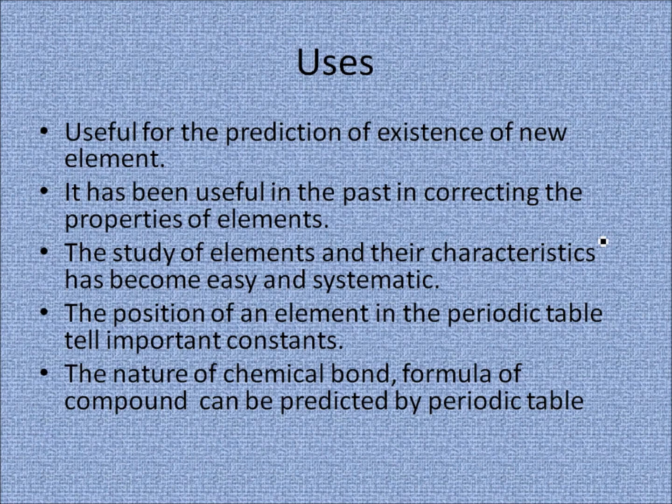The periodic table also tells us whether an element is a metal or non-metal: metals occupy the extreme left and bottom positions of the periodic table, while non-metals are at the extreme right. These are the basic uses of the modern periodic table to enhance knowledge of chemistry, compounds, elements, and reactions.